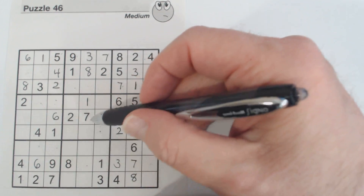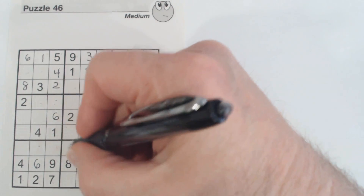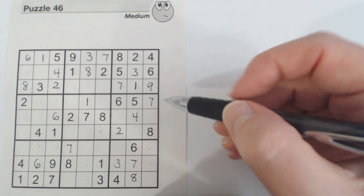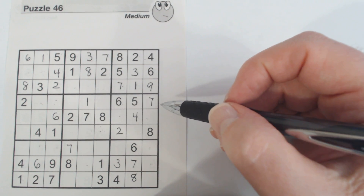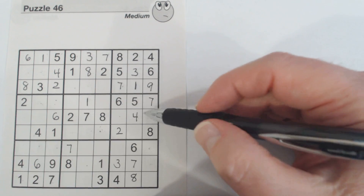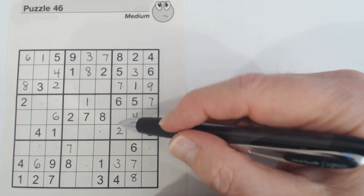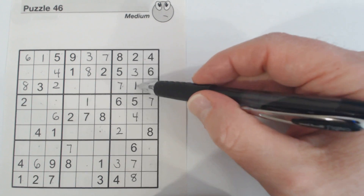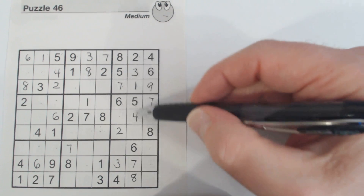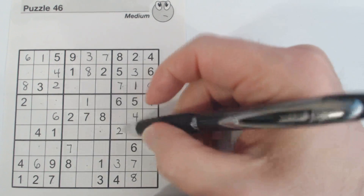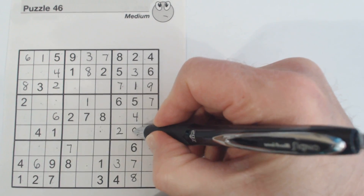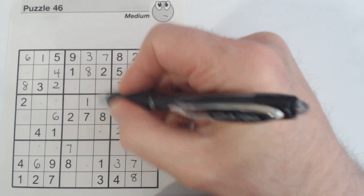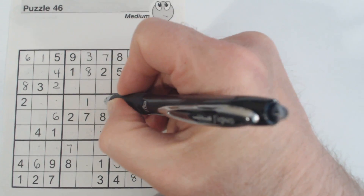Checking the 7s: 7, 7, 7, 7 — so that's a 7 right there. Only one number missing in another row: counting through 1-9 — we've got a 9 there and a 9 there, so that's a 9 right there.